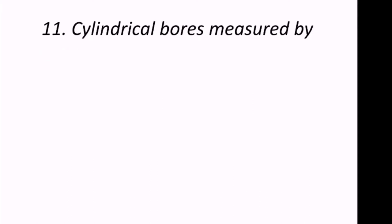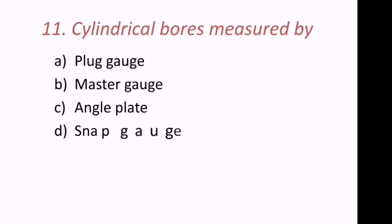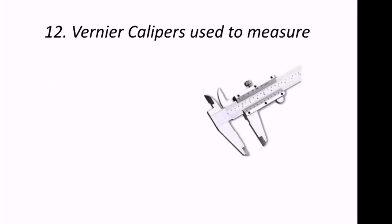Eleventh question: Cylindrical bores are measured by which instrument? The options are plug gauge, master gauge, angle plate, or snap gauge. The correct answer for measuring cylindrical bores is plug gauge — A is the correct answer.